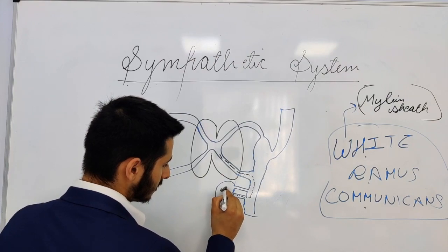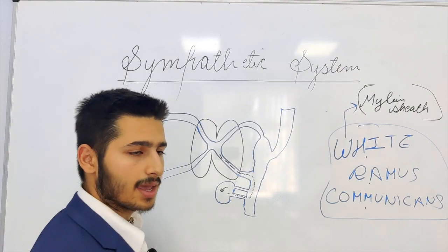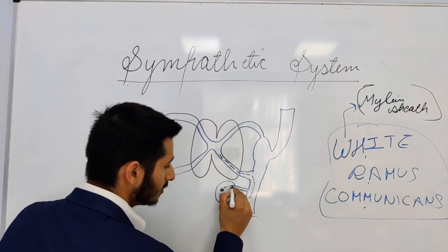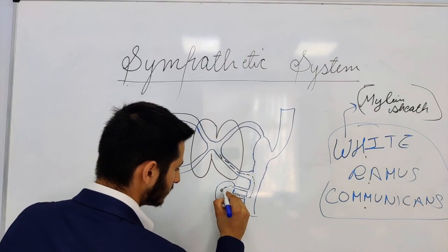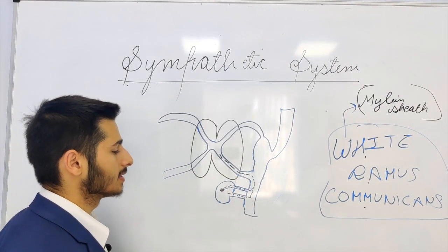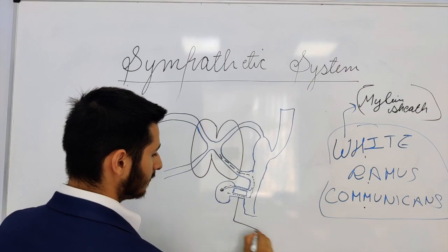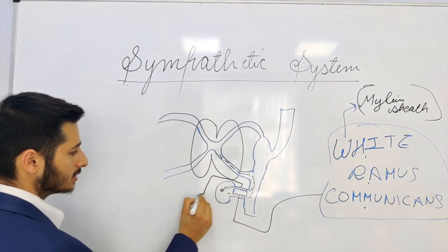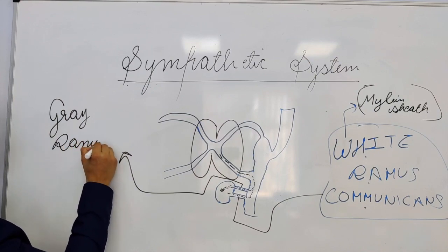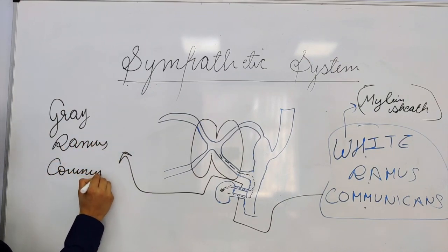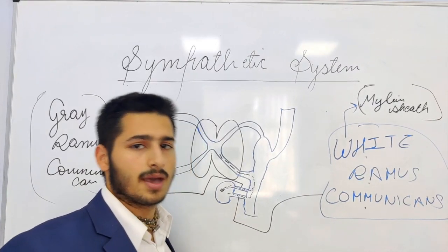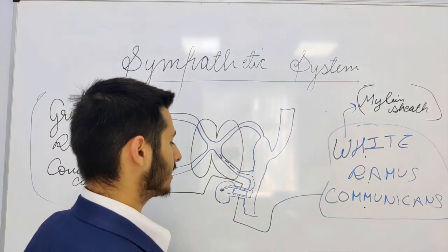After the preganglionic fibers synapse in the ganglion, the postganglionic fibers move back into the anterior ramus through a second structure known as the grey ramus communicans. The grey ramus communicans gives passage for postganglionic fibers, and these postganglionic fibers move back into the anterior ramus.